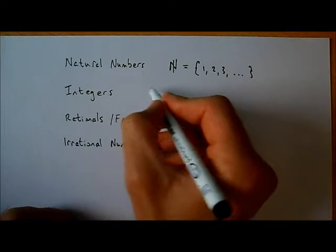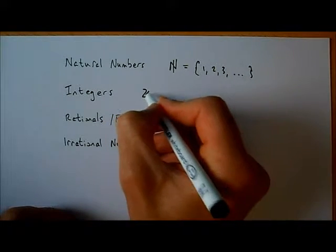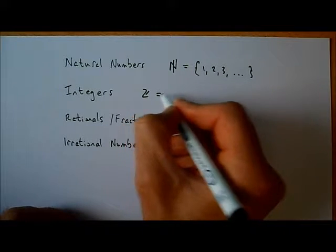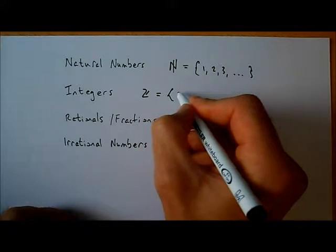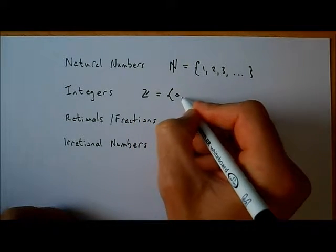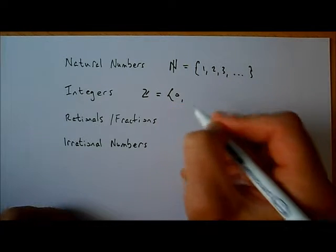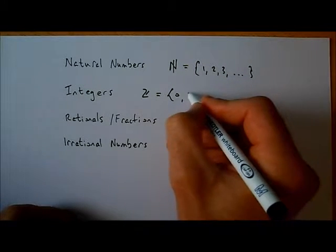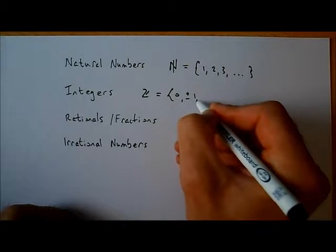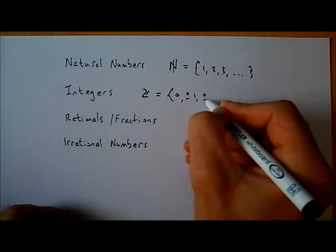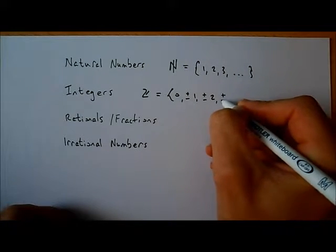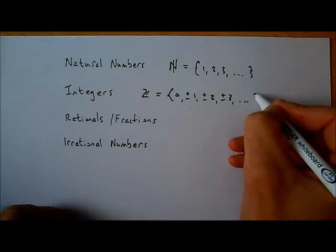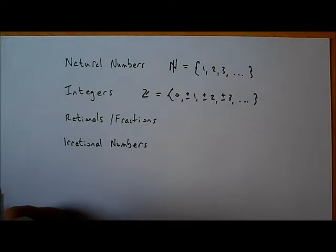The integers are given the symbol Z with a kind of a line going down the side. The integers — zero is an integer, and they're similar to the natural numbers except we have negative numbers as well, so we have zero, plus or minus 1, plus or minus 2, plus or minus 3, all the way up to plus or minus infinity. So they're whole numbers as well.